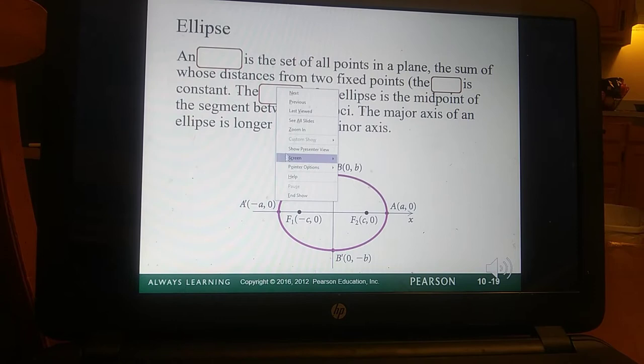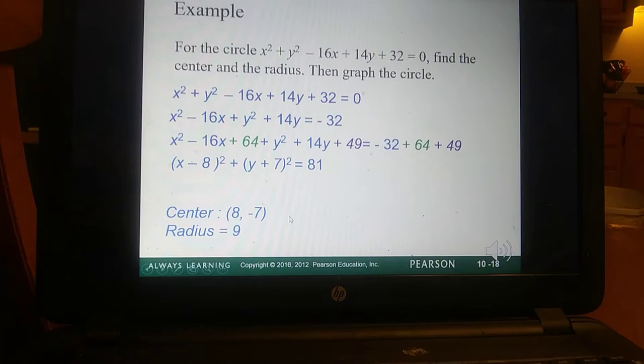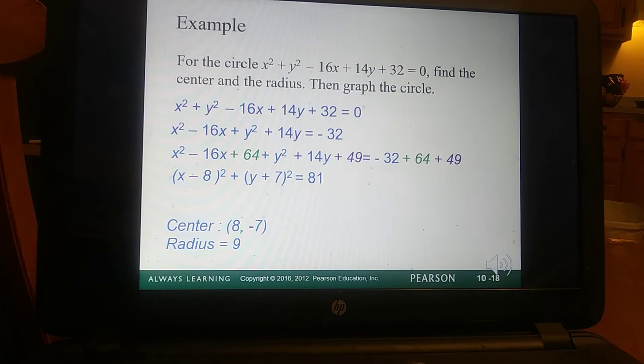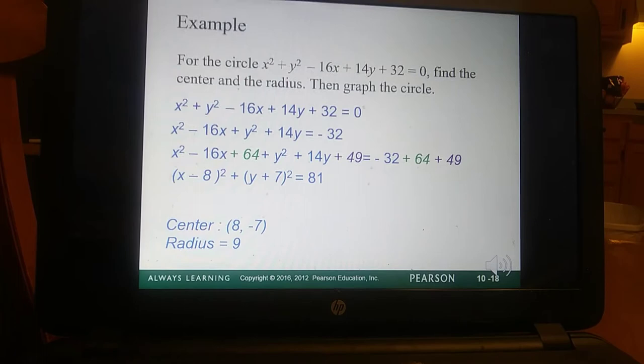So we have our center and our radius. And sorry, there actually is not a graph on the PowerPoint, but I think we know how to do it. We would just go ahead, plot your center, and then count 9 up, 9 down, 9 over, and 9 across from that center. And that will give you a pretty good picture of the circle. You know how much I'm a coffee lover. I was just sipping my coffee.